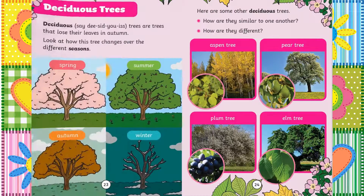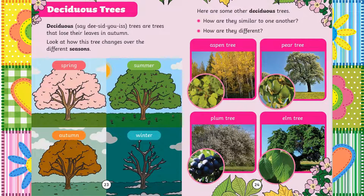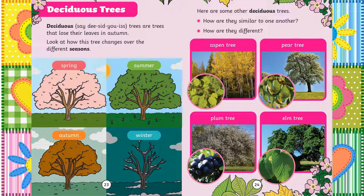Chapter 7: Deciduous trees are trees that lose their leaves in autumn. Look at how this tree changes over the different seasons. Look at it in spring, then in summer it's nice and green, autumn it's turning brown, and in winter no more leaves. Here are some other deciduous trees. How are they similar to one another? How are they different? We have the aspen tree, pear tree, plum tree, and the elm tree.